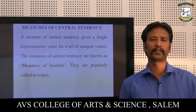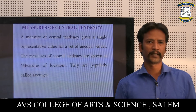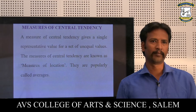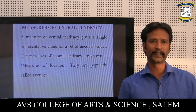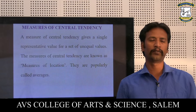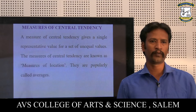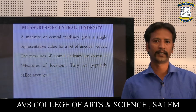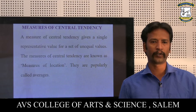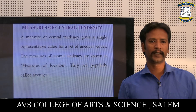The measures of central tendency: a measure of central tendency gives a single representative value for a set of unequal values. The measures of central tendency are known as measures of location, and they are popularly called averages.